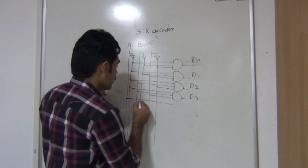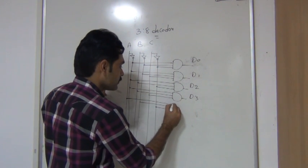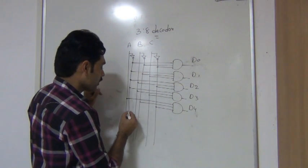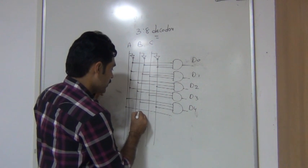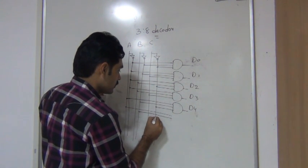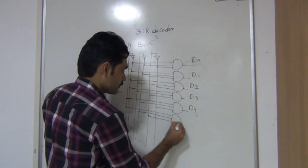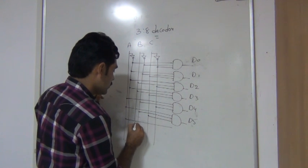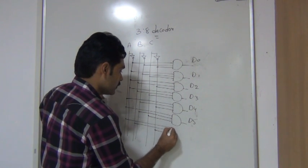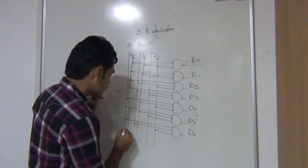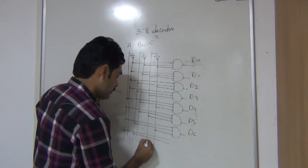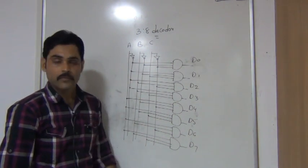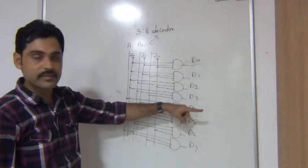For input 100, we connect A, B-bar, C-bar giving D4. For input 101, we connect A, B-bar, C giving D5. For input 110, we connect A, B, C-bar giving D6. For the last case 111, we connect A, B, C giving D7. Now the circuit is ready.